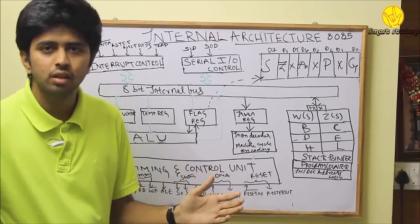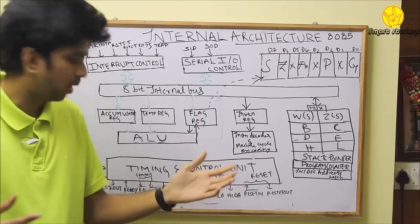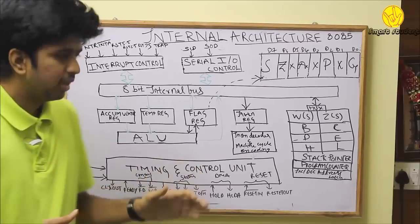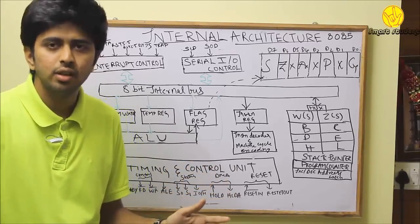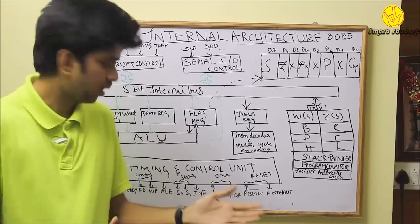Clock out: through clock out, timing and control signals of the peripheral devices are controlled. Ready pin: when the microprocessor is ready to transfer the data between input, output, and memory, ready pin is set to 1.